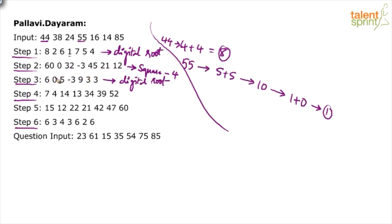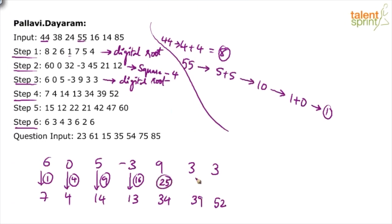Now, what happens in step 4? 6 has become 7, 0 has become 4, 5 has become 14. And so on. Now, try to check the differences. What is the difference? 1, 4, 9. 7 minus 6 is 1. 4 minus 0 is 4. 14 minus 5 is 9. 13 minus of minus 3 becomes 13 plus 3, which is 16. 34 minus 9 is 25. 39 minus 3 is 36. 52 minus 3 is 49. So, what do you find here? 1, 4, 9, 16, 25, 36, 49. All these are squares. 1 square, 2 square, 3 square and so on.